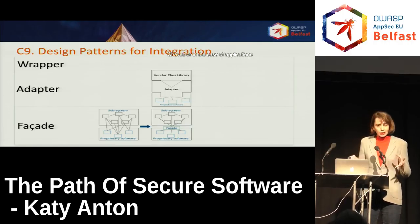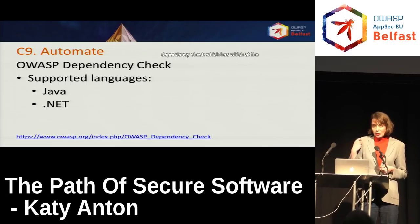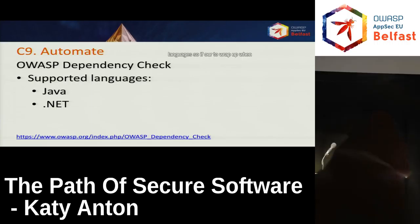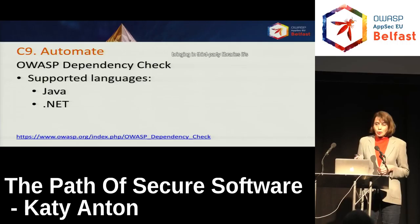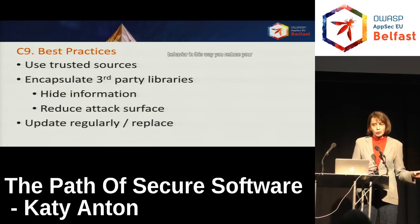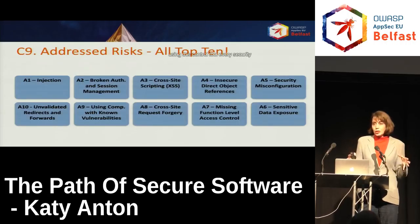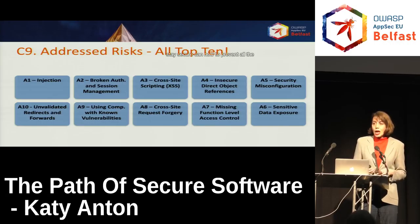For large Java applications, the number of third-party libraries can be large — from tens to hundreds. Managing those manually is impossible, so you need to automate. You can use OWASP Dependency Check, which currently supports .NET and Java. When bringing in third-party libraries: use them from trusted sources, encapsulate them to expose only the functionality you need and hide unwanted behavior — this reduces your attack surface — and verify them often, updating or replacing them if needed. Using control nine to leverage security frameworks and libraries correctly ensures your software is and stays secure.